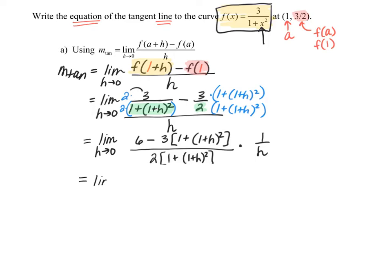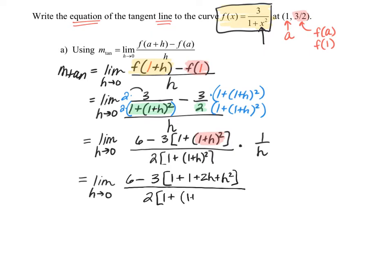More algebra. The limit as h approaches 0 — we need to multiply out (1+h)² inside that bracket, then distribute and combine like terms. (1+h)² expands to 1 plus 2h plus h squared. For the denominator, leave it as is — we don't want to expand it because our goal is to divide out the h. We only need to simplify the numerator. In the brackets, 1 plus 1 is 2, so we then distribute the 3 into everything in the brackets.